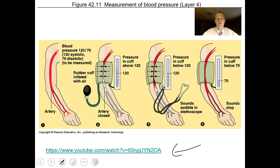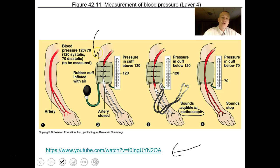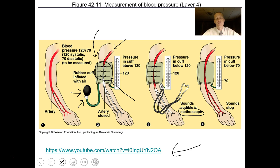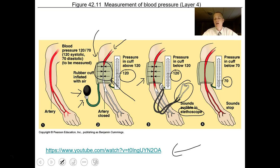Blood pressure is measured with a sphygmomanometer — a blood pressure cuff and reading device — along with a stethoscope to hear the pressure of blood being squirted through arteries. The blood pressure cuff inflates an air bladder that tightens until no blood flows through the artery. As you release the air, you listen with the stethoscope — when you first hear blood flowing, that's the top number; when you stop hearing it, that's the bottom number.